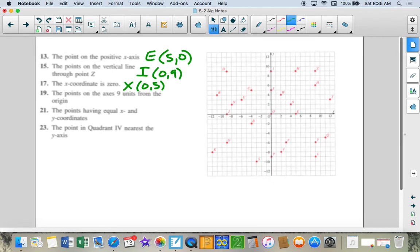The points on the axis, 9 units from the origin. So here's my origin. And on the axis, 9 units from the origin. So we can go in any direction. Down, left, right. So 1, 2, 3, 4, 5. That's not 9 units. 1, 2, 3, 4, 5, 6, 7, 8, 9. So I could be 1. 1, 2, 3, 4, 5, 6, 7, 8, 9.